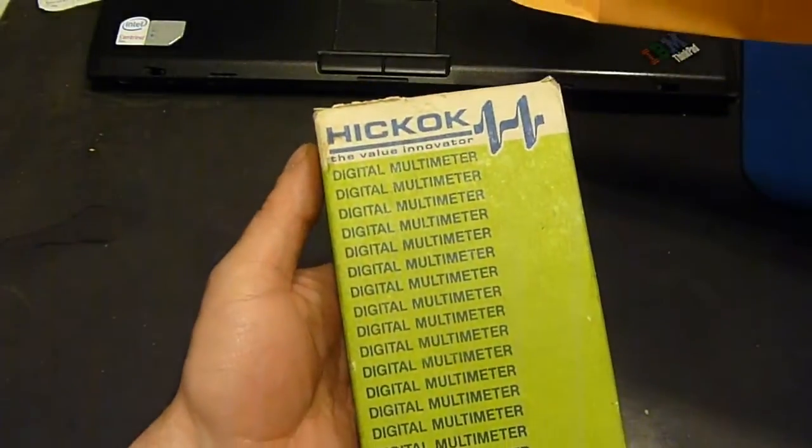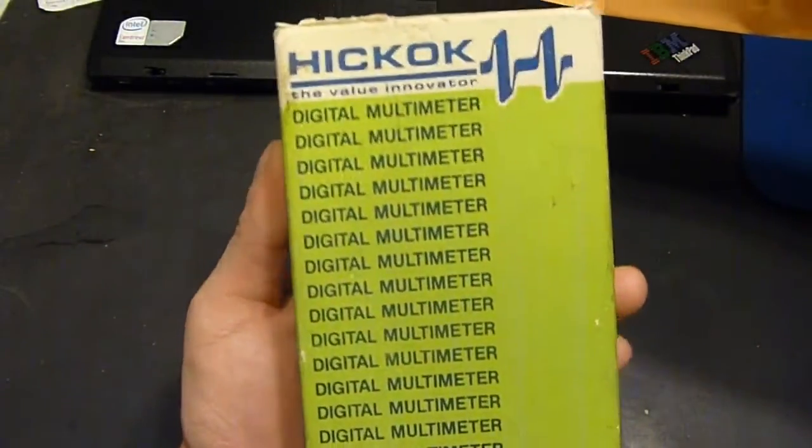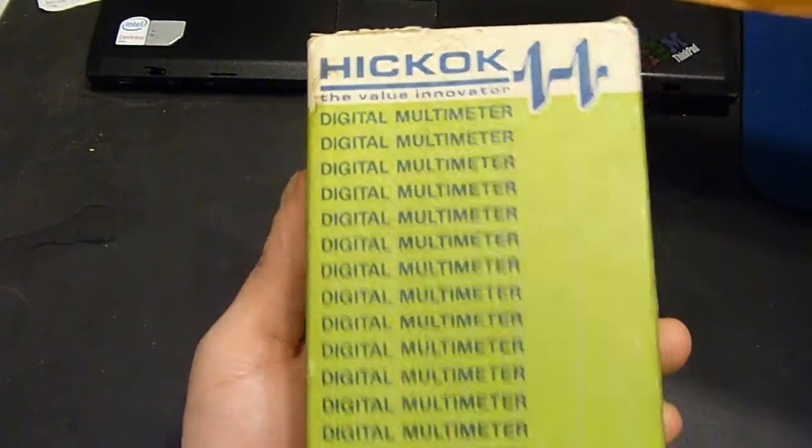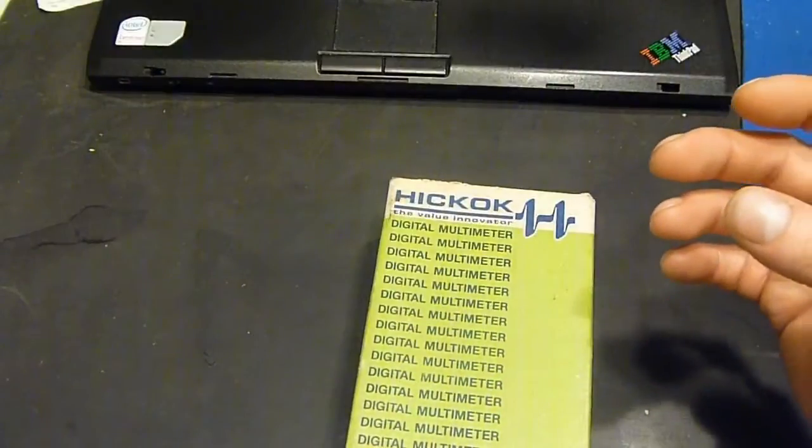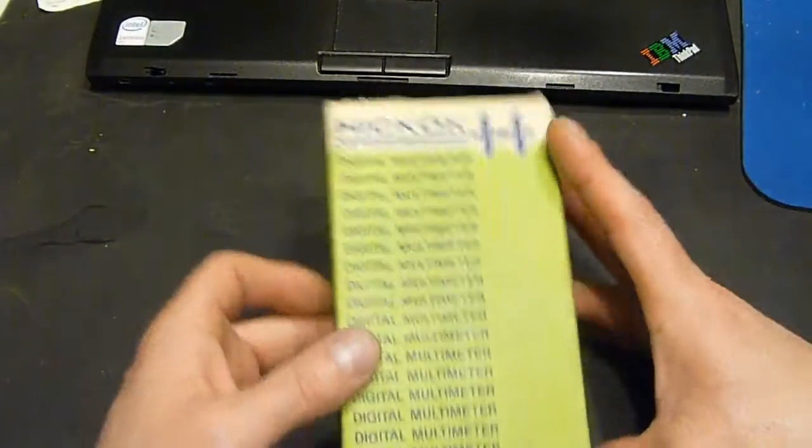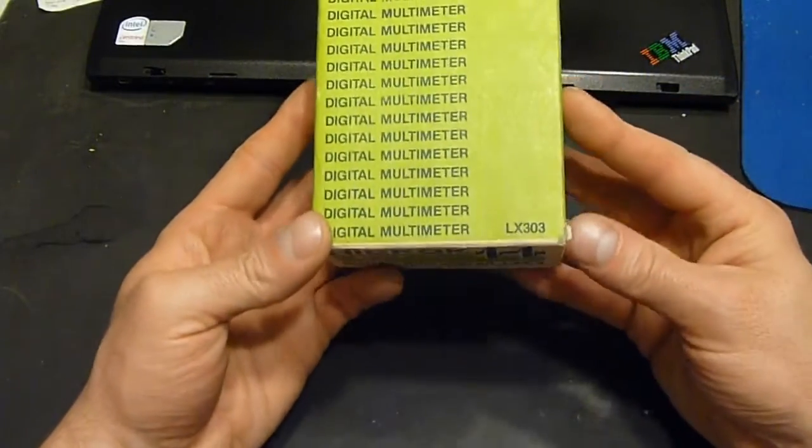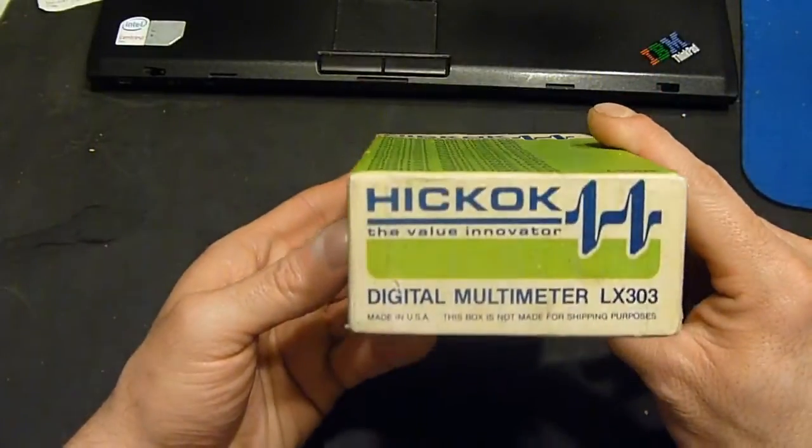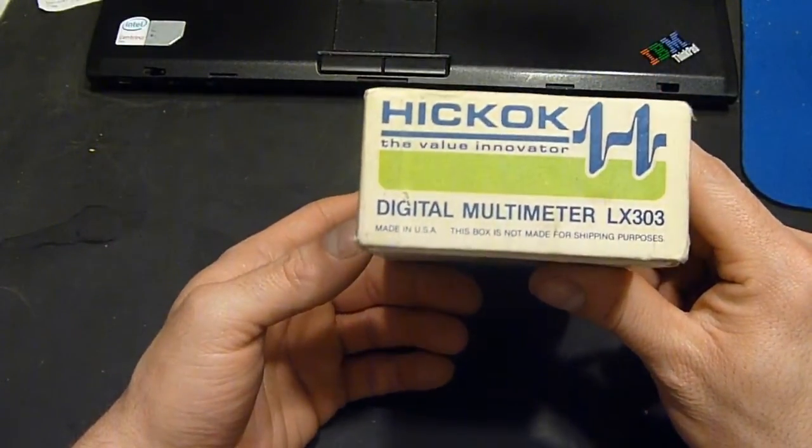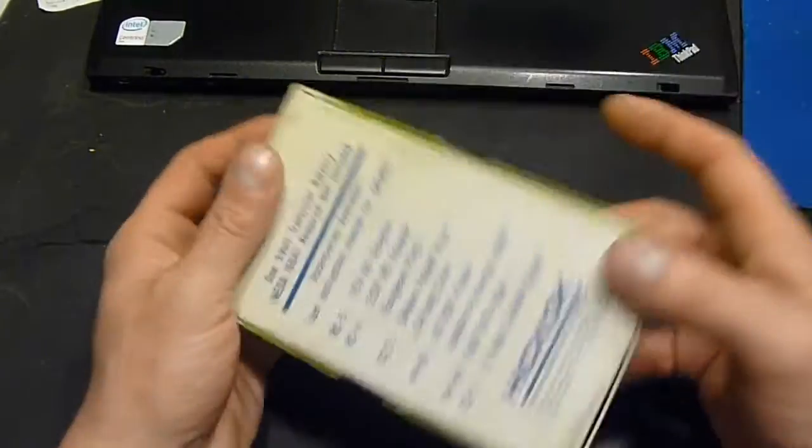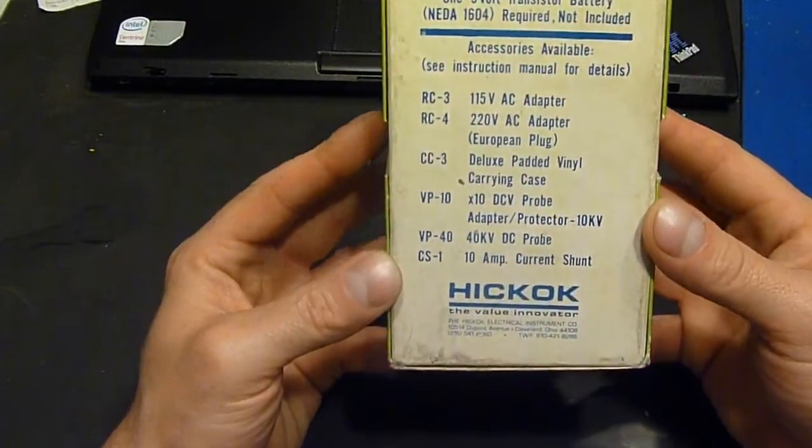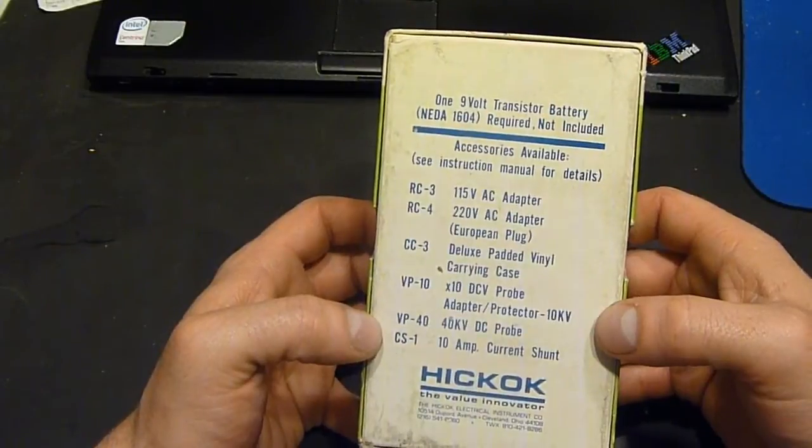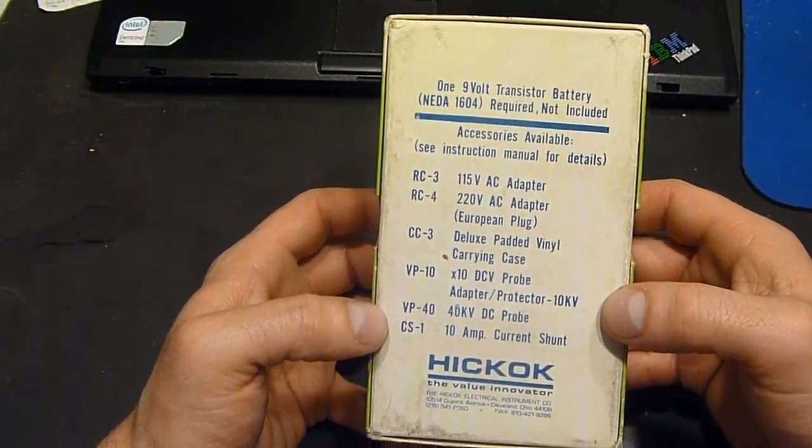But anyway, here's something a bit more modern. Hickok, the value innovator. Well okay, so that's not probably was not their slogan in the 50s, but this is an LX303 digital multimeter. Made in USA, this box is not made for shipping purposes. One 9 volt transistor battery required.